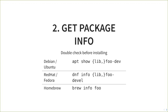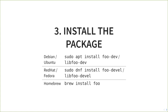Once you've found your package, double-check it's the right one before installing. Get the metadata about the package, read the description, check the website. Then install it — on Debian/Ubuntu that's 'apt install', on Red Hat/Fedora it's 'dnf install', and of course there's 'brew install' for Homebrew.